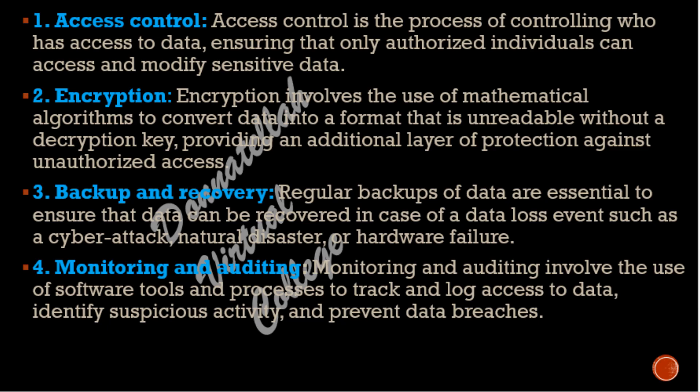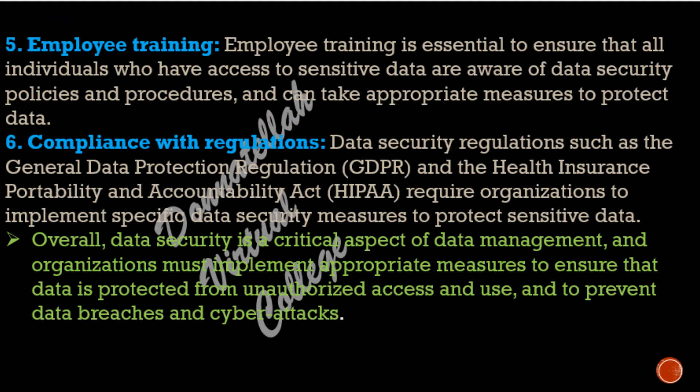4. Monitoring and auditing: monitoring and auditing involve the use of software tools and processes to track and log access to data, identify suspicious activity, and prevent data breaches. 5. Employee training: employee training is essential to ensure that all individuals who have access to sensitive data are aware of data security policies and procedures, and can take appropriate measures to protect data. 6. Compliance with regulations: data security regulations such as the General Data Protection Regulation (GDPR) and the Health Insurance Portability and Accountability Act (HIPAA) require organizations to implement specific data security measures to protect sensitive data. Overall, data security is a critical aspect of data management, and organizations must implement appropriate measures to ensure that data is protected from unauthorized access and use, and to prevent data breaches and cyber attacks.